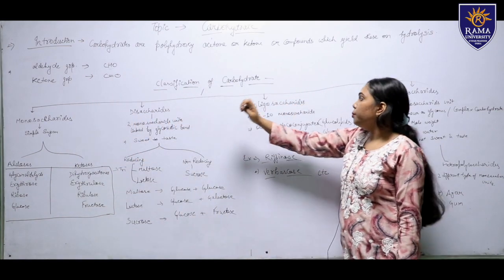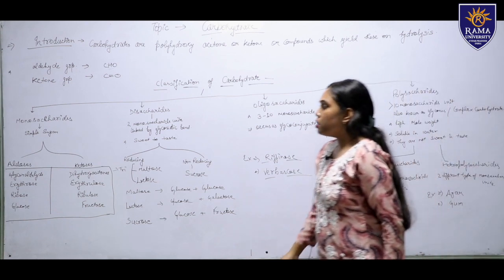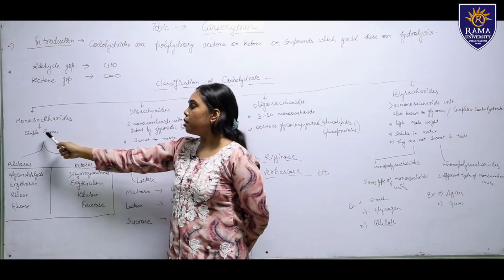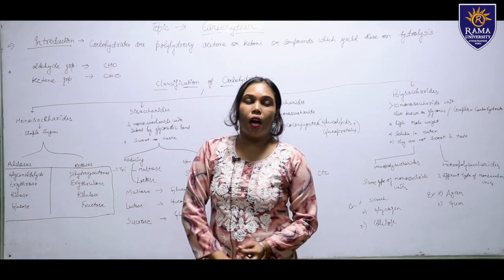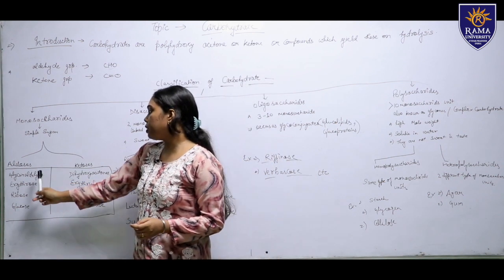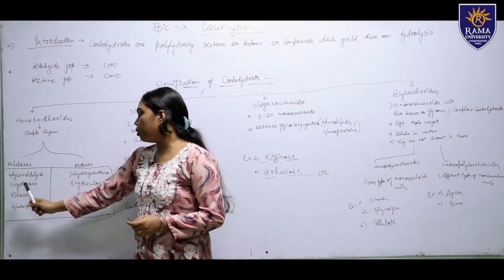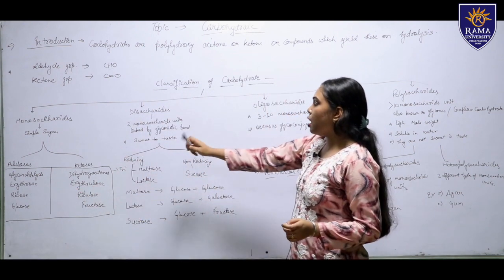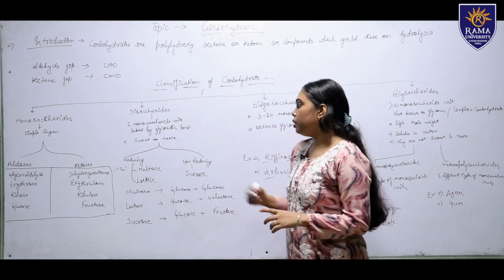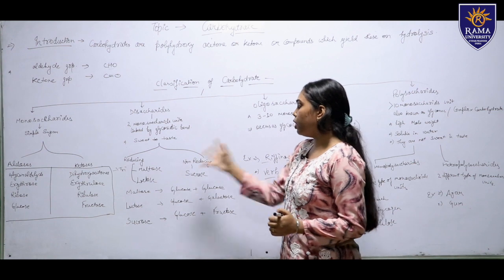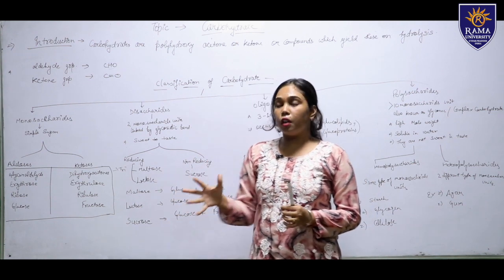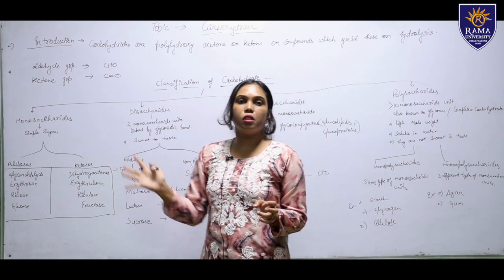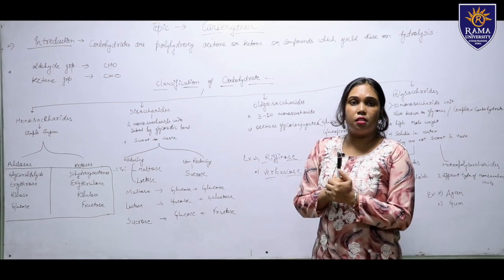Monosaccharides are subdivided into aldoses and ketoses. They are simple sugars that do not hydrolyze further. Examples include glyceraldehyde, dihydroxyacetone, erythrose, erythrulose, ribose, glucose, and fructose. Disaccharides have two monosaccharide units linked by a glycosidic bond, are sweet in taste, and have reducing and non-reducing sugars. Reducing sugars are maltose and lactose; the non-reducing sugar is sucrose.